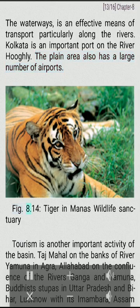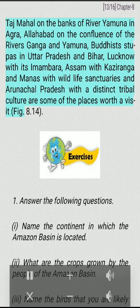The plain area also has a large number of airports. Tourism is another important activity of the basin. Taj Mahal on the banks of river Yamuna in Agra, Allahabad on the confluence of rivers Ganga and Yamuna, Buddhist Stupas in Uttar Pradesh and Bihar, Lucknow with its Imambara, Assam with Kaziranga and Manas wildlife sanctuaries, and Arunachal Pradesh with a distinct tribal culture are some of the places worth a visit.